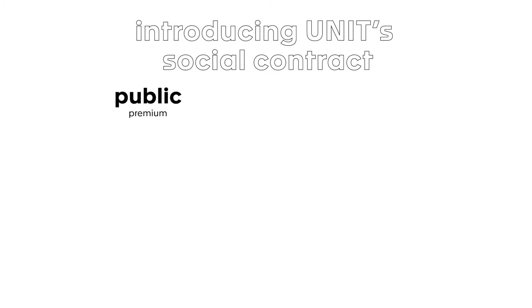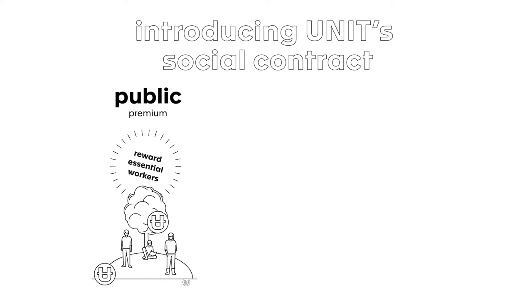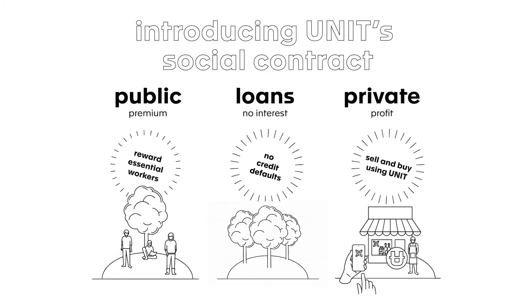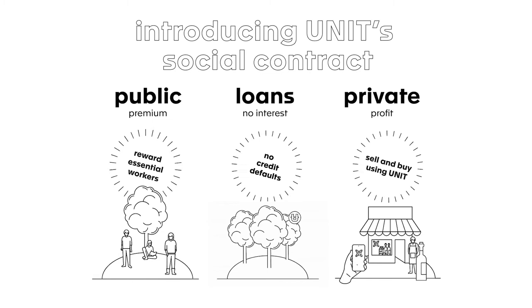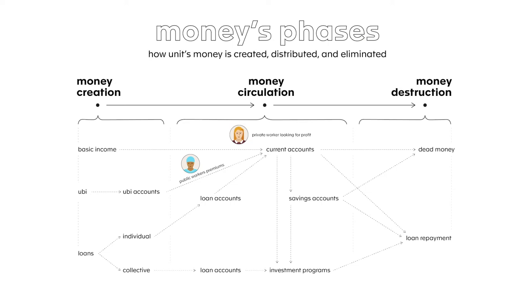To uphold this contract, UNIT allows public and private organizations to increase their workers' income in different ways. For the public sector, because public services should be free and cannot derive profit, public workers are paid an additional fee to incentivize work on essential sectors — referred to as the public premium. In contrast, private organizations cannot receive such public premiums, so individuals and companies are free to charge whatever they want and use profit to increase their revenues. All citizens and organizations can also ask for loans, and since everybody is granted a basic income, there's no risk of credit default for reasonable-sized loans. But if we keep creating money, what's stopping it from losing its value? We need a way to control the amount of money.